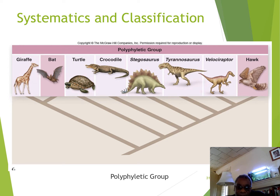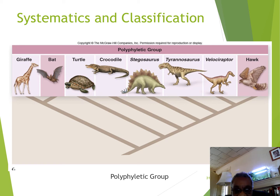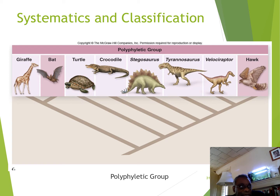A polyphyletic grouping has two different groups of distantly related animals pushed together. Poly means many phyla. A bat and a hawk would be a good example — the only reason you'd group them together is if you were studying analogous structures. They aren't closely related even though they have physical similarities, so a bat and a bird in the same grouping would be considered polyphyletic.